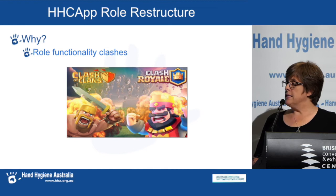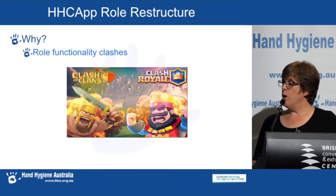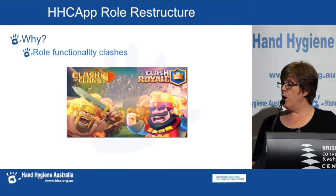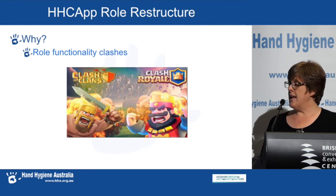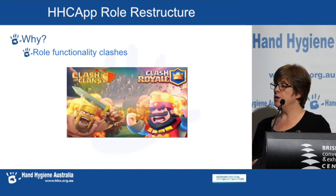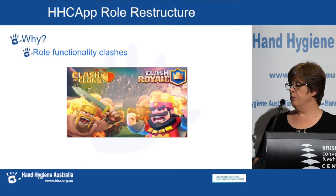In our current system, some roles impact on the functionality of other roles. In other words, some roles don't play nicely together. For example, in the past, if an auditor was allocated a nurse unit manager role to run some reports, the auditor role overrode the NUM role, preventing reports from being run.